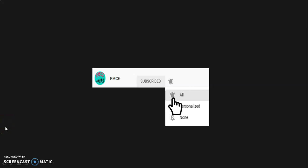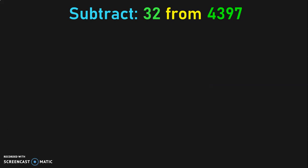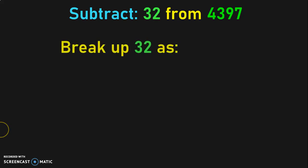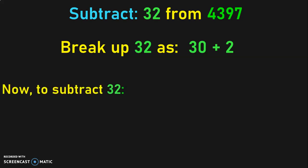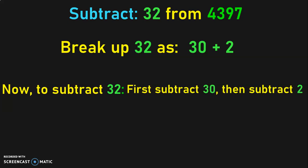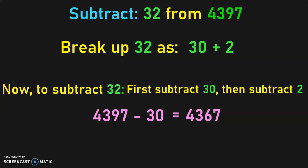Let us see the next concept: subtract 32 from 4397. The approach remains the same. The nearest tens to 32 is 30. So, break up 32 as 30 plus 2. To subtract the given number by 32, first subtract by 30 and then subtract by 2 again. So, 4397 minus 30 gives you 4367. Next, 4367 minus 2 gives you the answer 4365.